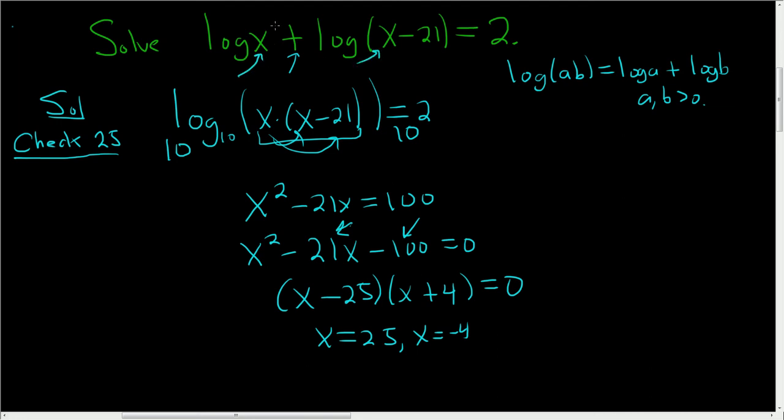So I'm going to put the 25 here where the x is. So we get log 25 plus here we get 25 minus 21. So 4. And we want that to be equal to 2. So let's see. 25 times 4 is 100, right? We use the product rule. And that's equal to 2. And that checks because the base here is 10. And 10 squared is 100. So it checks. So 25 is one of our answers.